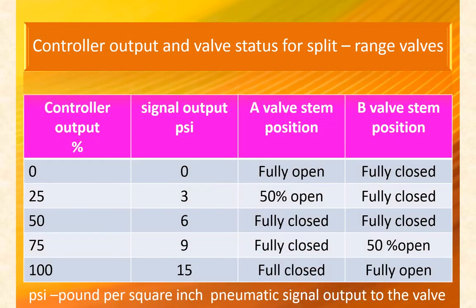This table presents the controller output to the two split range control valves and their response. At 0% controller output: A valve fully open, B valve fully closed. At 25% output: A valve 50% open, B valve fully closed. At 50% output: A valve fully closed, B valve fully closed. Note: at 50% output, both A and B are fully closed.